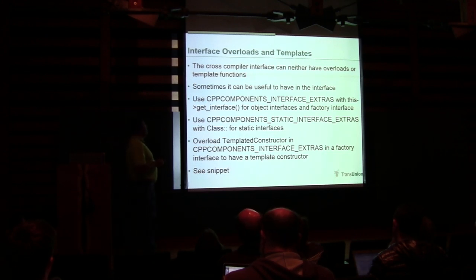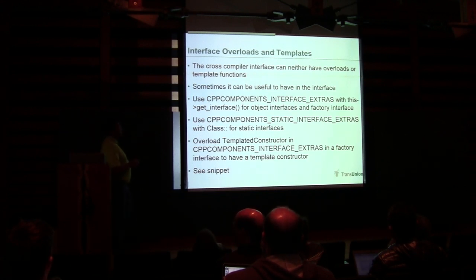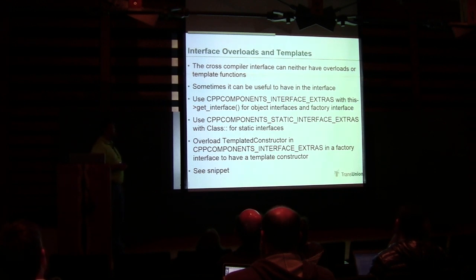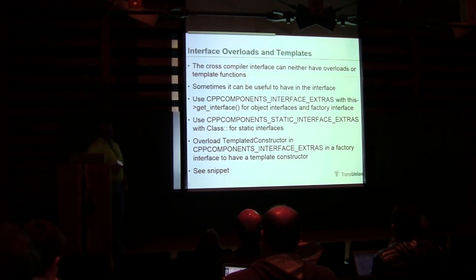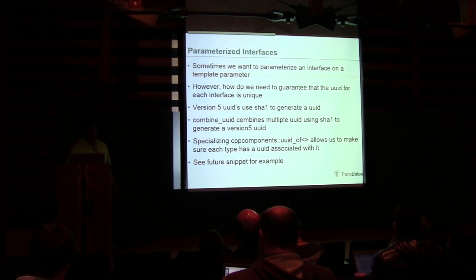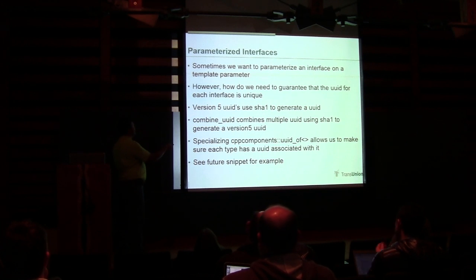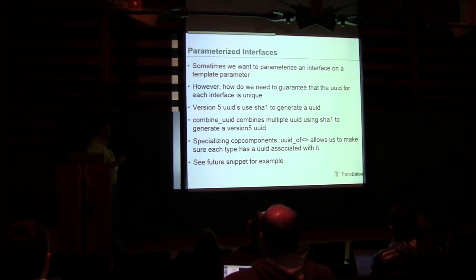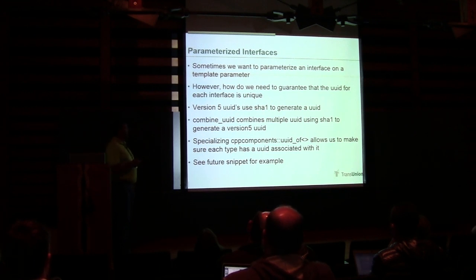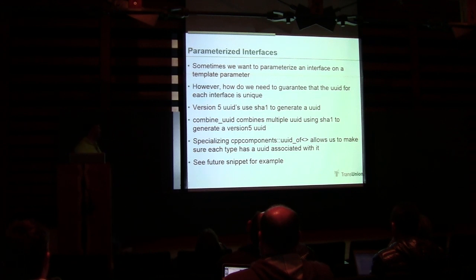We'll skip over this generally. There's a way — because of how we can have either overloads or templated functions — to add them in there. There's something called interface_extras, static_interface_extras. We can even have templated constructors that map to the underlying type, and parameterized interfaces. The trick is we need our UUIDs to be unique. We use version-5 UUIDs — in Boost UUID there's actually a SHA-1 name generator — and we abstract that with combine_UUIDs, combining UUIDs based on template parameters to guarantee each interface is actually unique across its template instantiations.